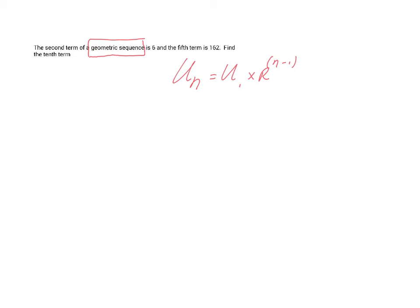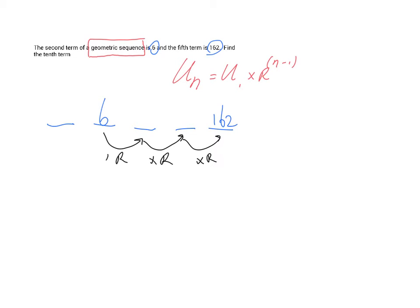It says the second term is 6 and 162 for term number 5. Because we're talking about relatively small term numbers, let me just put some lines down for five terms. The second one is 6 and the fifth one is 162. Now I can see that 6 times r times r times r times r is going to give me 162. So 6 times r to the power 3 equals 162.